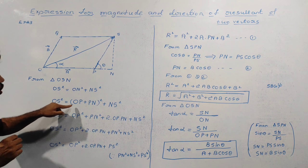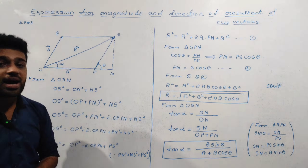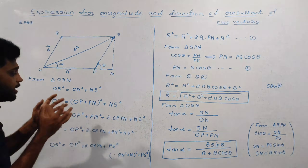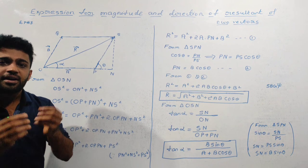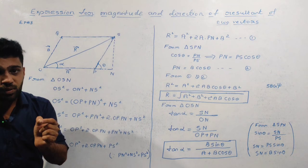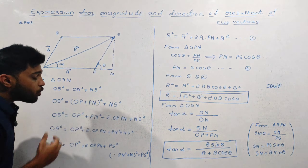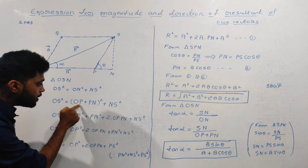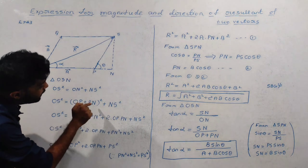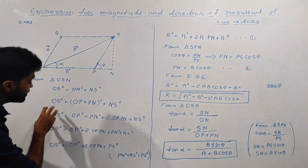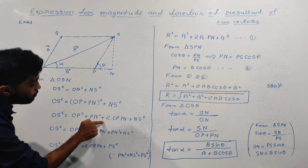OS squared is equal to (OP + PN) whole squared plus NS squared. Expanding using the identity (a + b) squared equals a squared plus b squared plus 2ab: OS squared equals OP squared plus PN squared plus 2 times OP into PN.